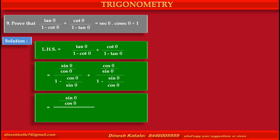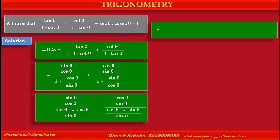At the denominator, by cross multiplication, we get sin θ minus cos θ upon sin θ. In the second term, numerator as it is cos θ upon sin θ, and at the denominator by cross multiplication, cos θ minus sin θ upon cos θ.